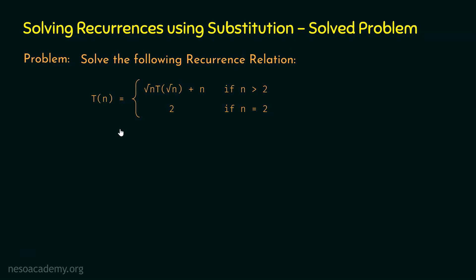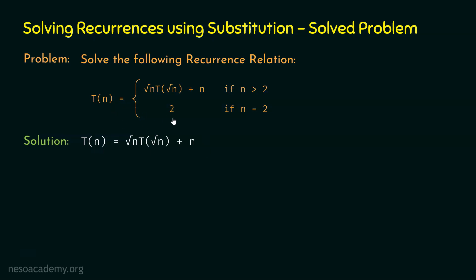According to the substitution method, we start from the recursive case: T(n) = √n · T(√n) + n. This is the big problem to solve. The small problem is T(n) = 2 if n = 2. If n is 2, then T(n) is a constant equal to 2 — this is the base case. We are starting from the recursive case.